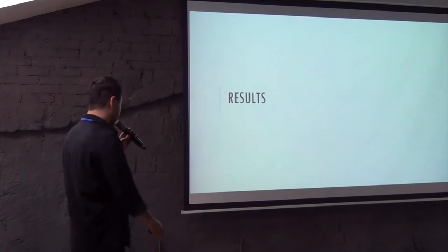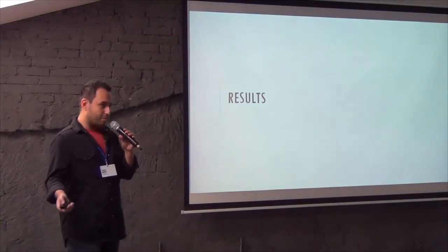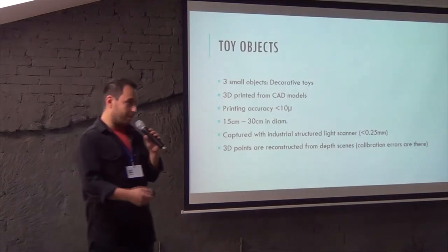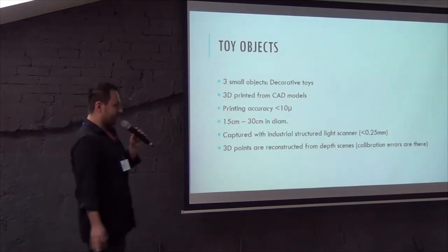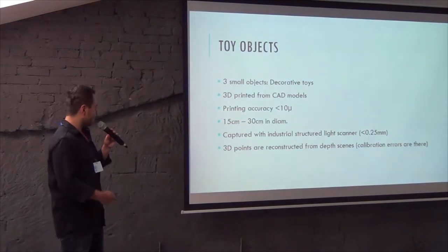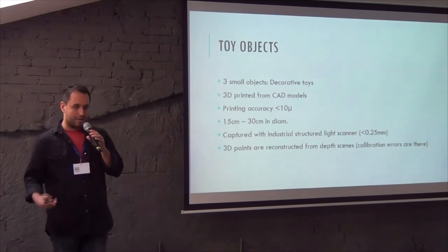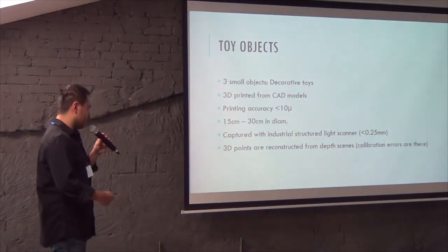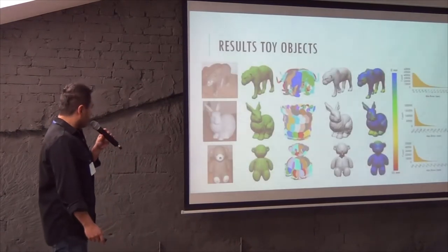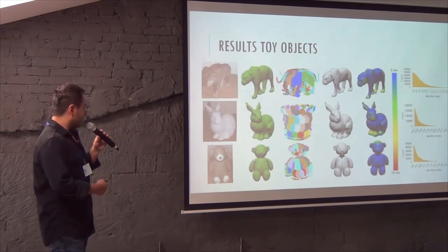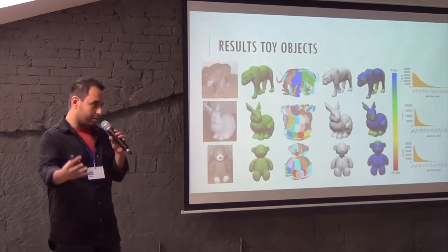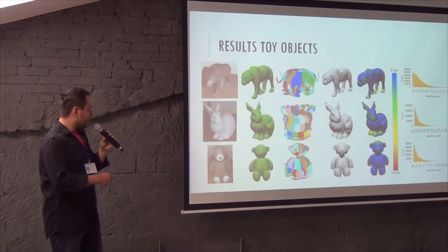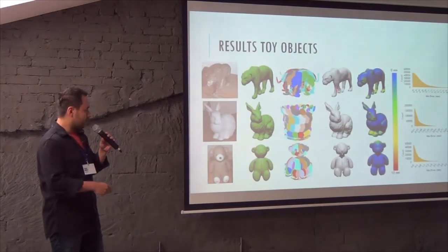We collected a couple of datasets. One is toy objects — we 3D-print CAD models because we want to verify the correctness of the reconstruction. The printing accuracy, they claim, is pretty good. The objects are generally 15 to 30 centimeters in diameter — good enough for initial evaluation. We capture them with a nice structured light scanner which Siemens produces. You see the objects, and then the detected and segmented point clouds put in one coordinate frame — not the coordinate frame of the CAD model, but on the frame of the initial camera. Then you run the optimization and get results with error histograms.